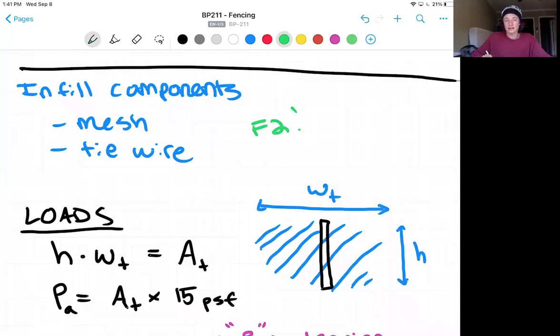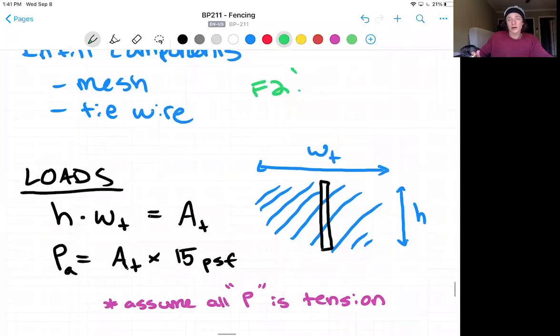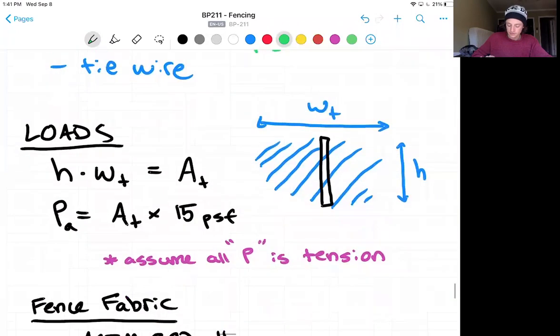To find our demand, we are going to take that height times tributary width to get a tributary area. And that tributary area times that 15 PSF load, area load from the code, is going to give us our load that we'll use for our wire mesh, which we'll dive into first. And we're going to assume all of this area load is going to be transferred into tension on the wire mesh fence fabric.